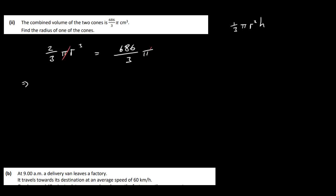Now the pi's will cancel, and we get 2 over 3 R cubed is equal to 686 over 3. Actually the 3's here will cancel as well, we can multiply both sides by 3, so that will give us 2 R cubed is equal to 686. Divide by 2, R cubed is equal to 343. And then all we've got to do is get the cubed root of 343, and that's just 7. So 7 centimeters. So the radius of one of the cones is 7 centimeters.